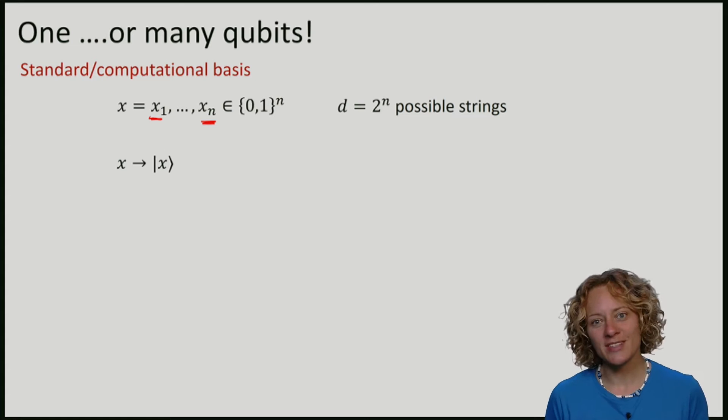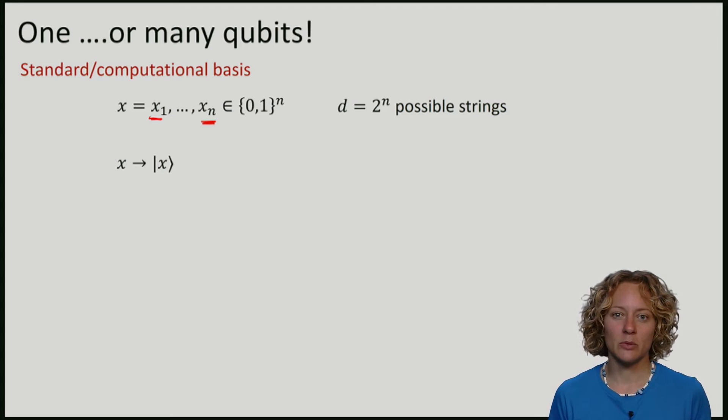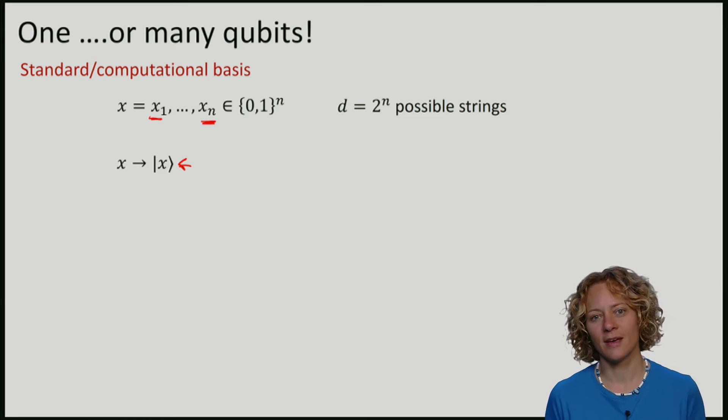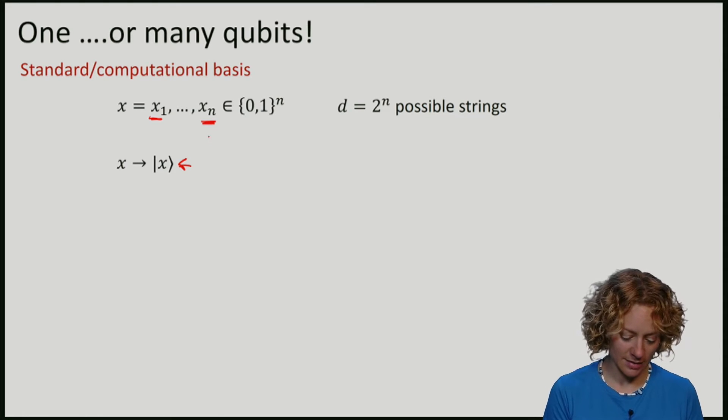We can now proceed just as before, where we associate a vector with every possible classical string. How we'll do this is that we will make the vector 0 everywhere except at the position indexed by x.